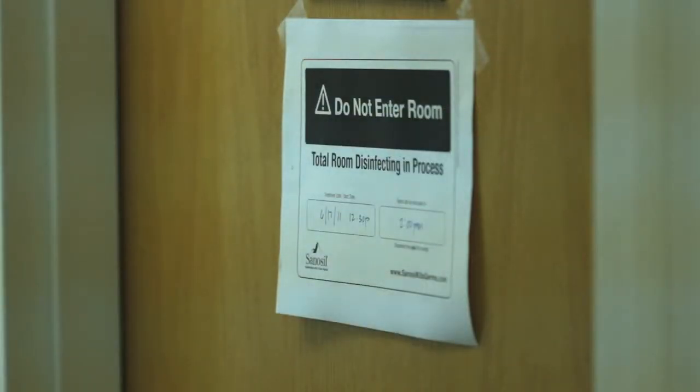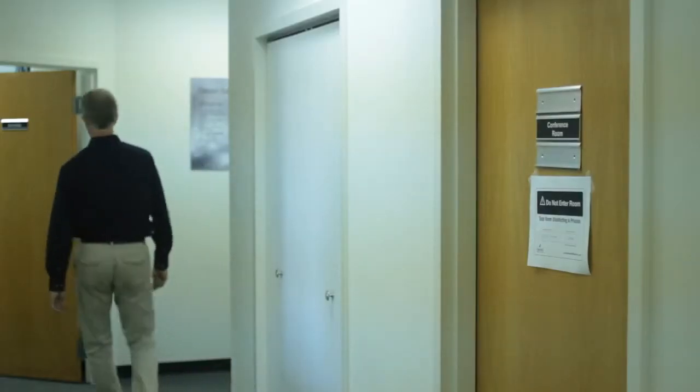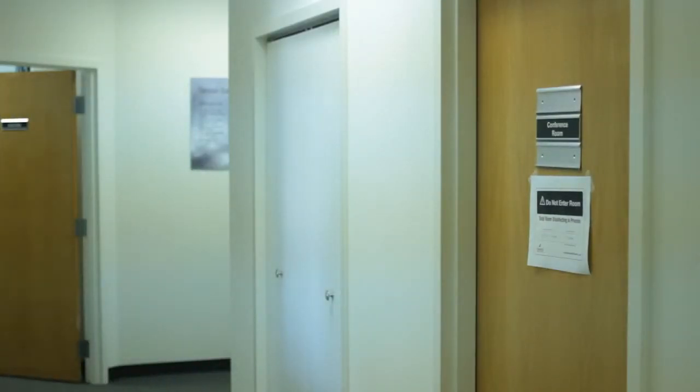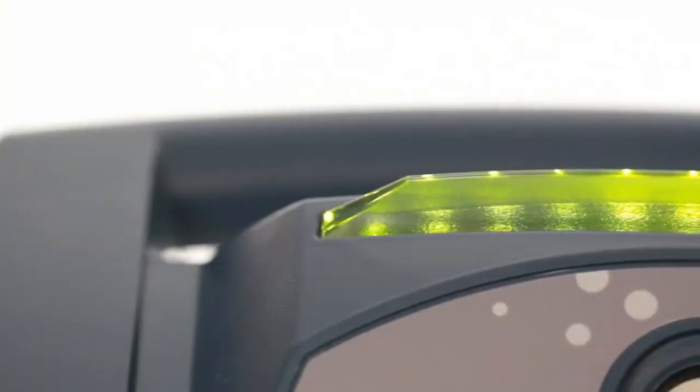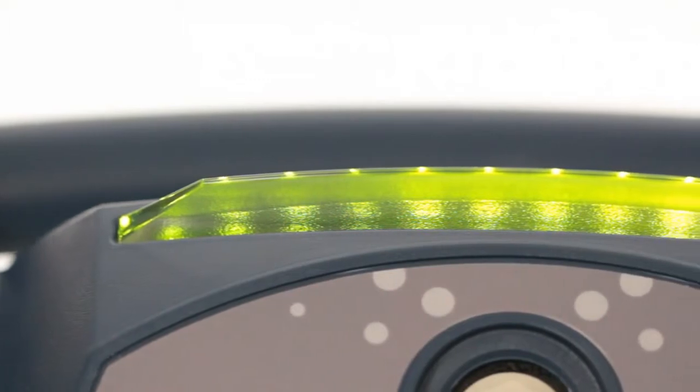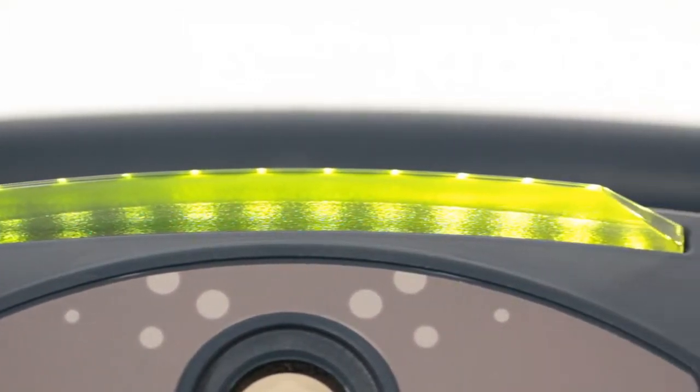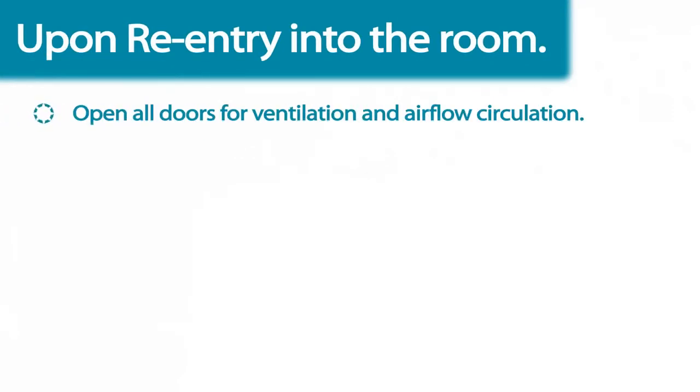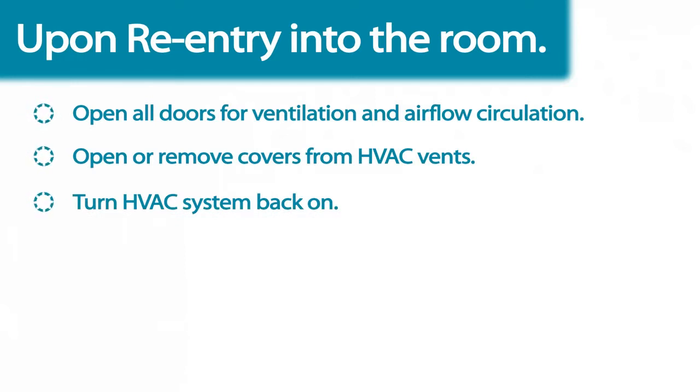When the Halo has finished dispensing, the room will be full of atomized Sanosil disinfectant and should not be entered. The status indicator will continue to illuminate a steady red. You may re-enter the room when the green status indicator light on the top of the fogger is illuminated. At this time, it is recommended that you open all doors to allow ventilation and airflow circulation in the room. Also, remove any covers from smoke detectors at this time.